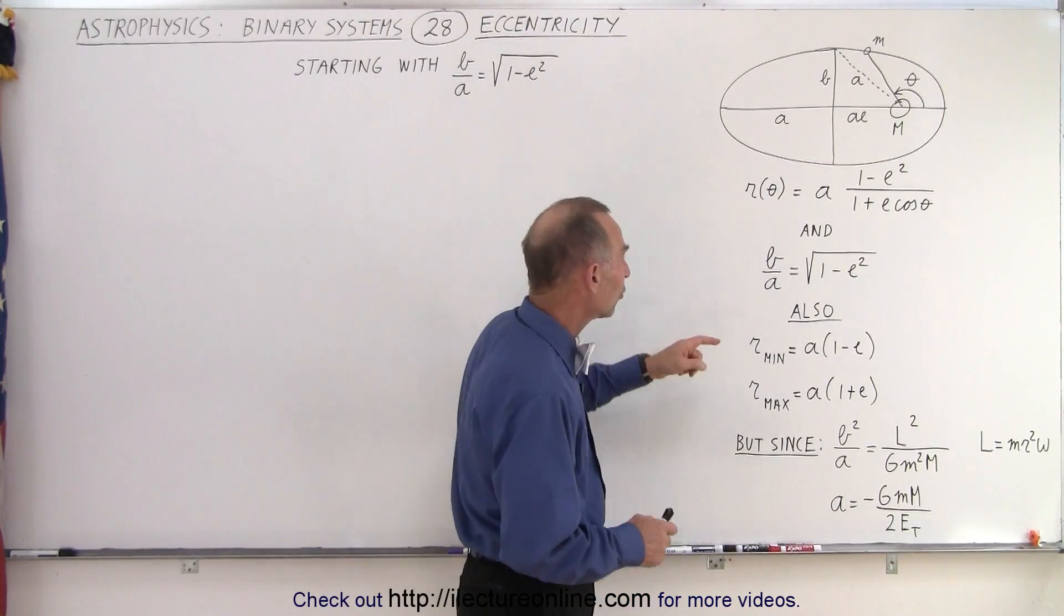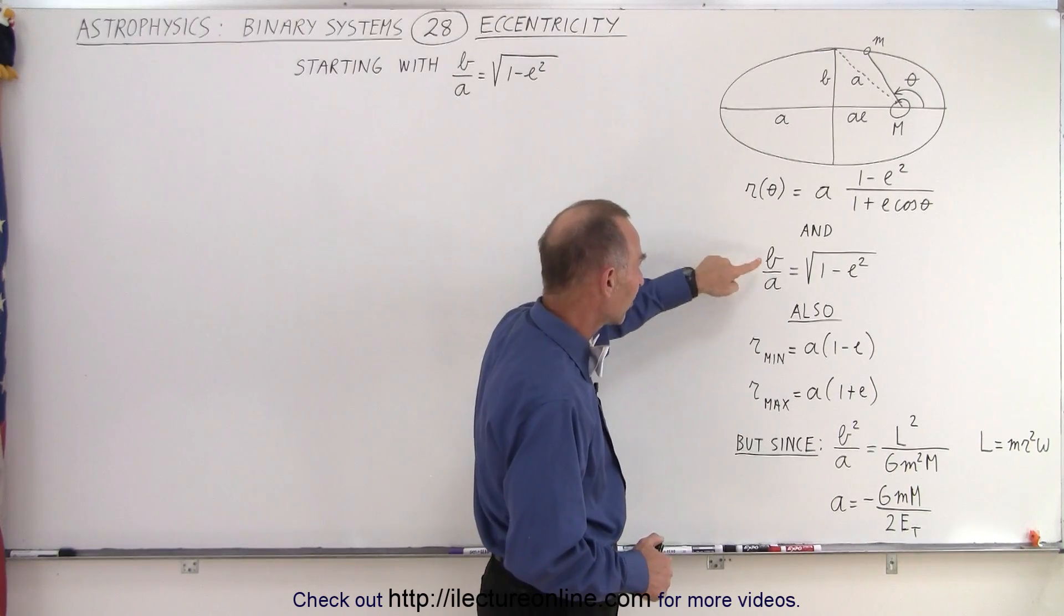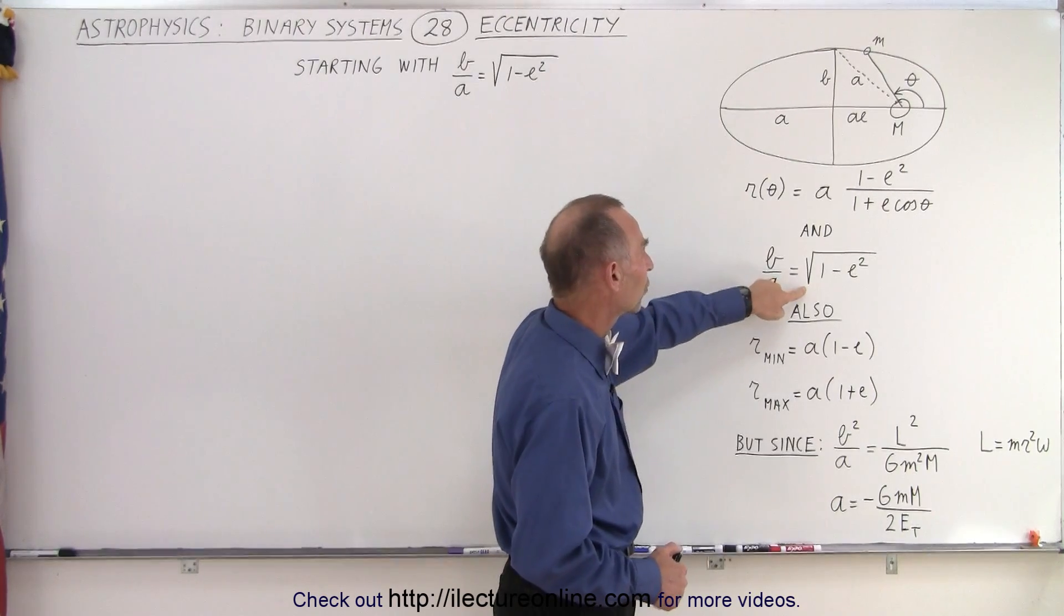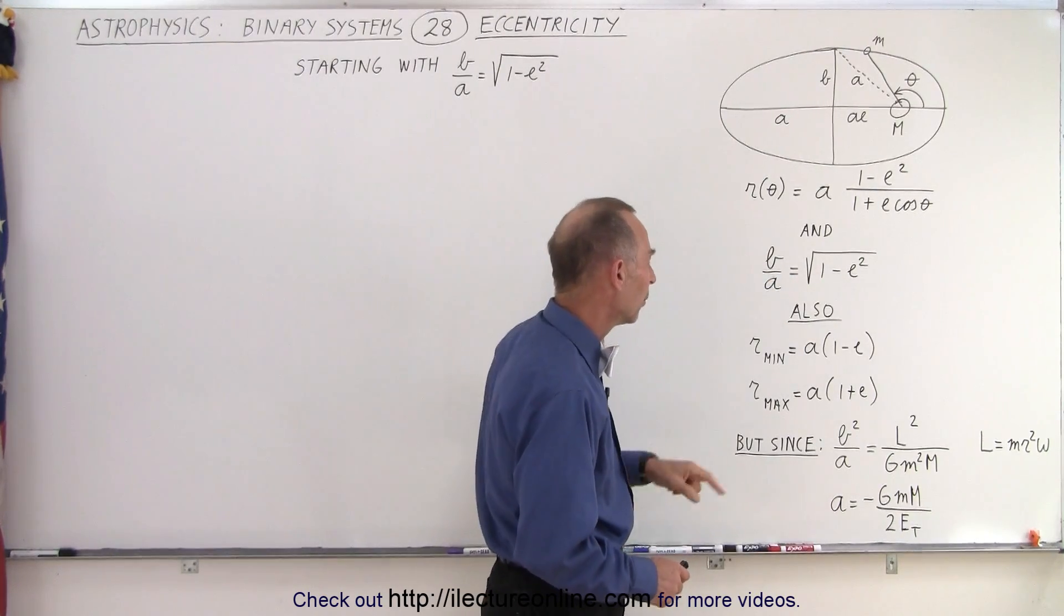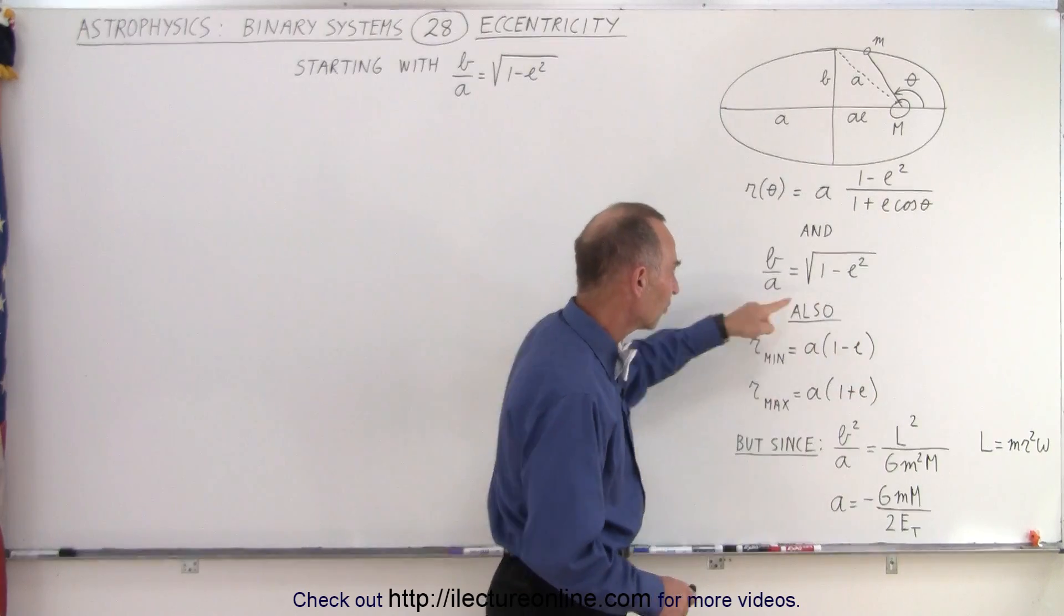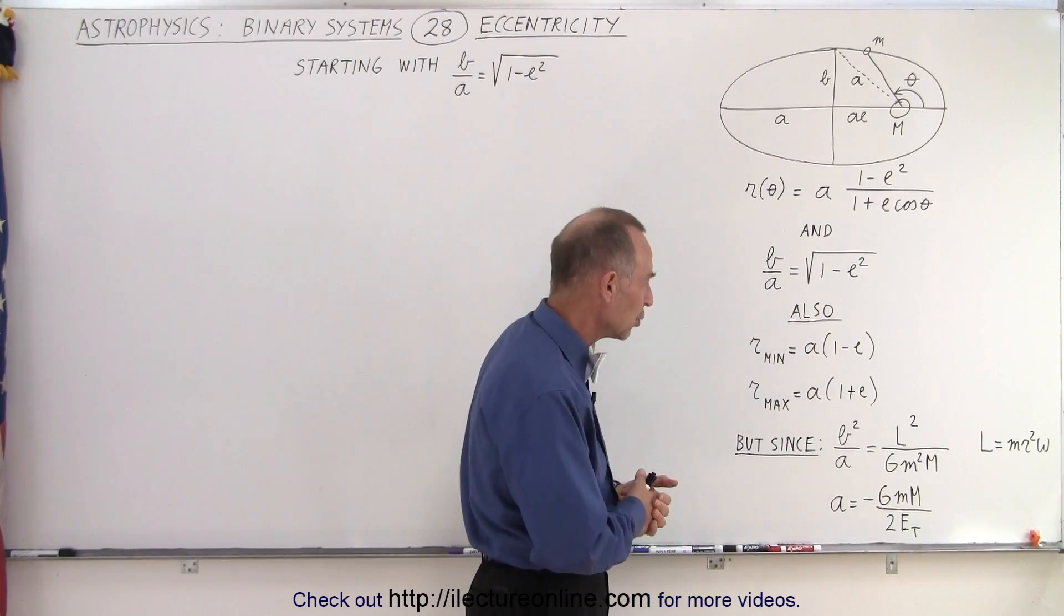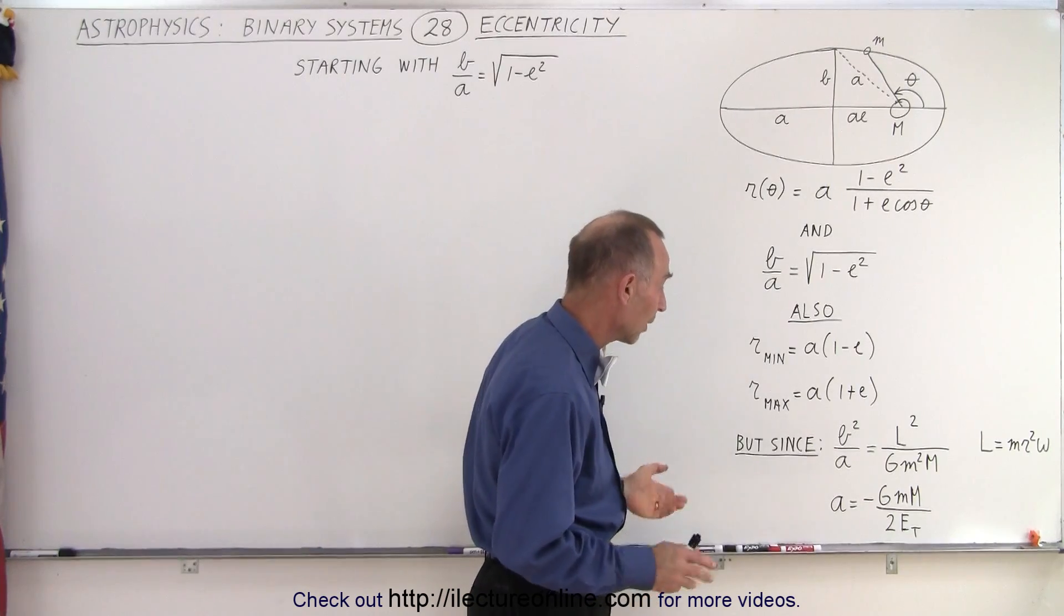We also know that the ratio of the semi-minor axis to the semi-major axis is equal to the square root of 1 minus e squared. We can also write the eccentricity in these two equations, which is what I typically use. It's kind of easy to use these two equations.